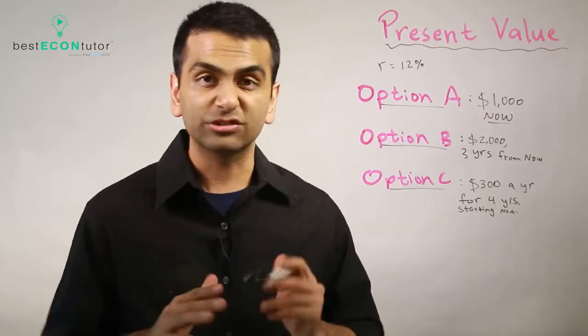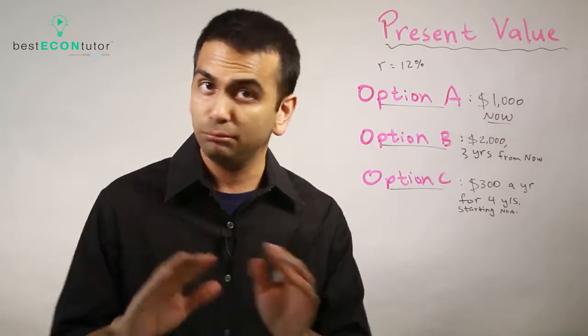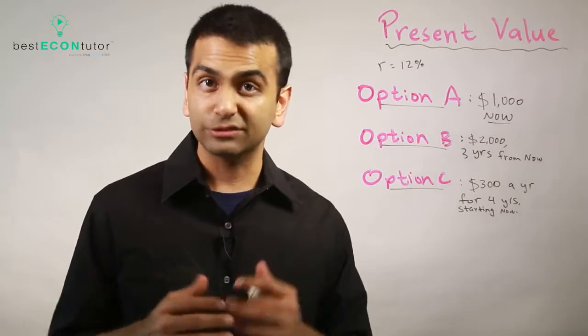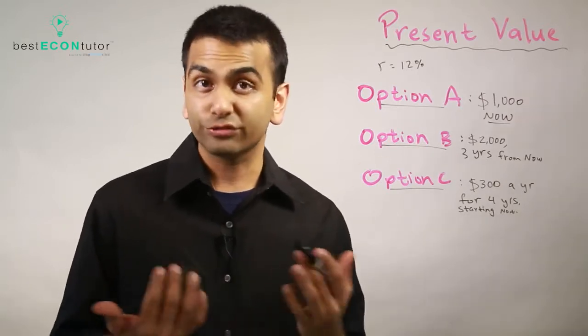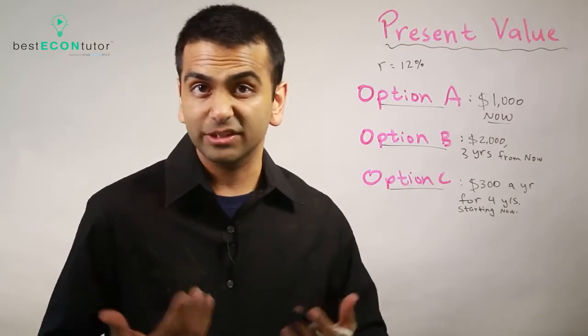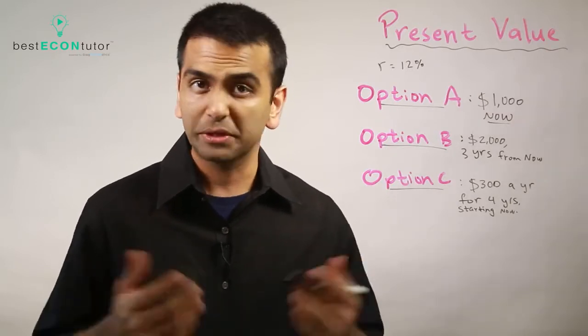So let's say one option is that they're going to give you $1,000 right now, that's it. Another option is that they're going to give you $2,000 but it's three years from now. And a third option is that they're going to give you $300 a year starting now for 40 years.